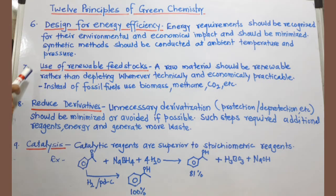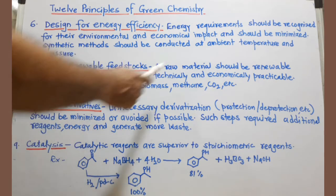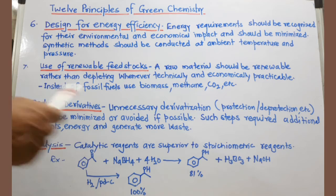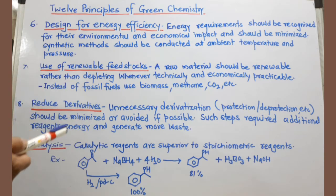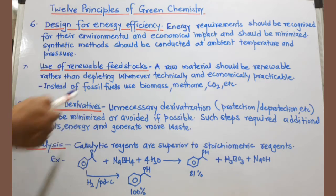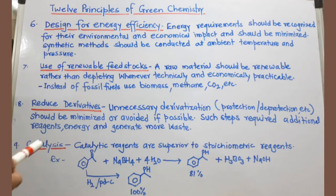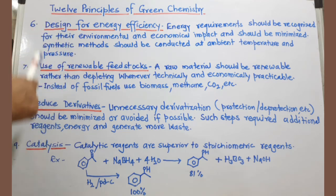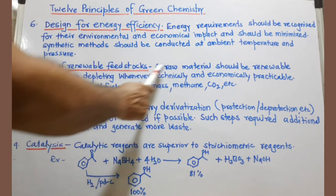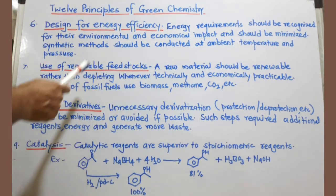The seventh principle is the use of renewable feedstock. Whatever raw material you are using should be renewable rather than depleting. Using feedstock from fossil fuels, which have limited stock and are non-renewable, is not ideal. Instead, using biomass, methane, or carbon dioxide is preferred. Whenever you design a synthesis, the raw material should be renewable rather than non-renewable.